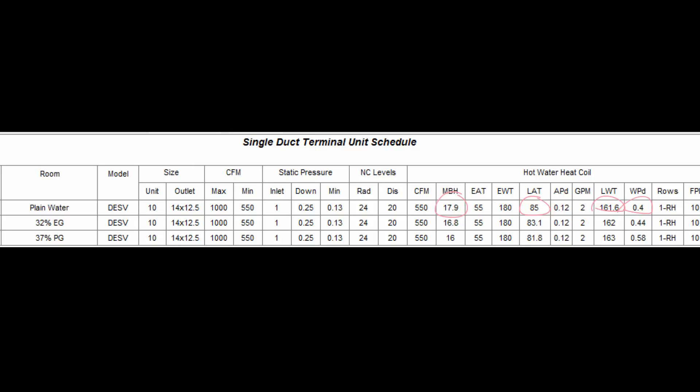Now looking at line two with 32% ethylene glycol, you can see that the MBH and leaving air temperatures have gone down. The leaving water temperature has gone up because the heat transfer isn't as effective as plain water, and the pressure drop is a little bit higher because ethylene glycol has a higher viscosity than water.